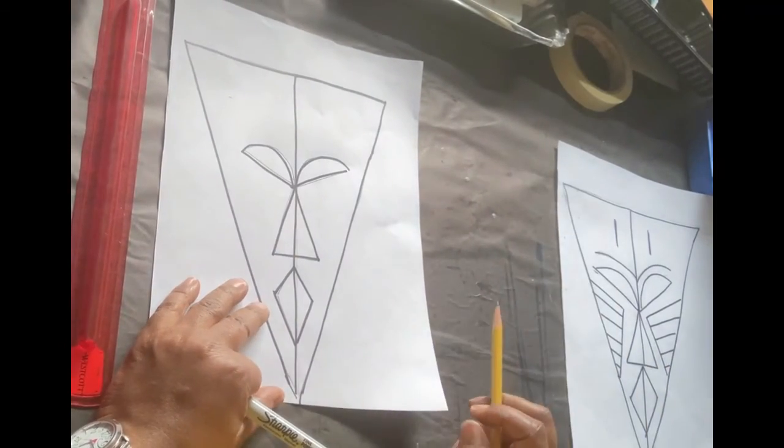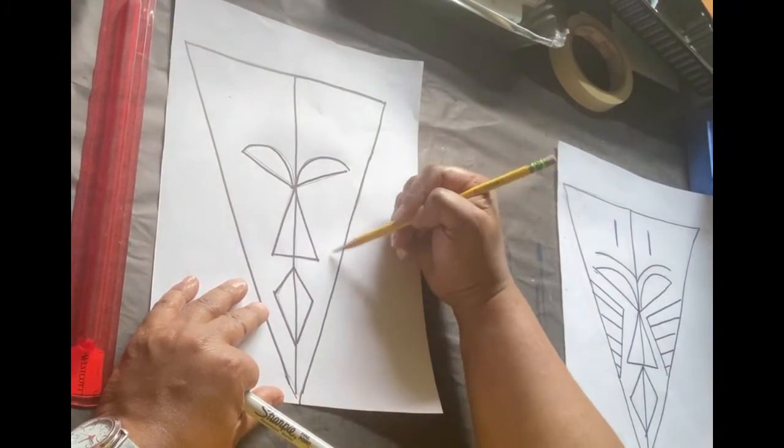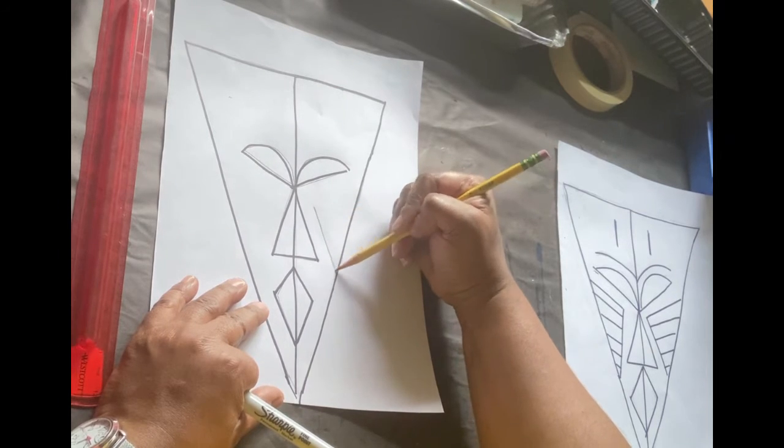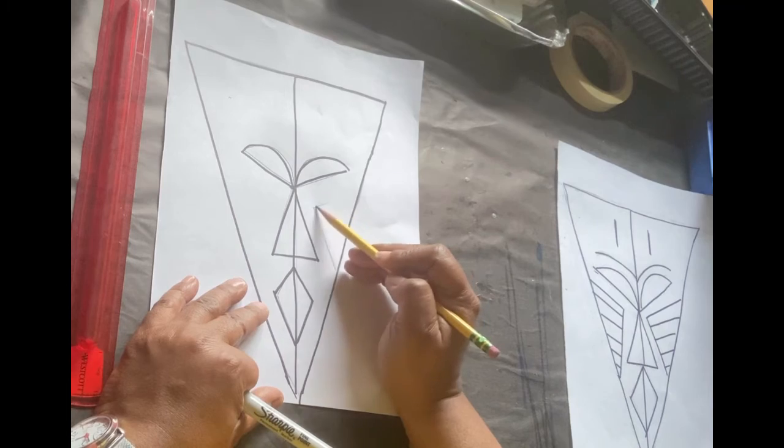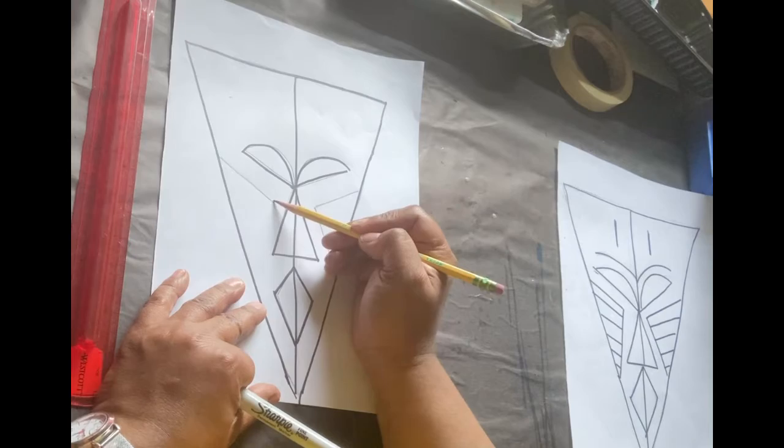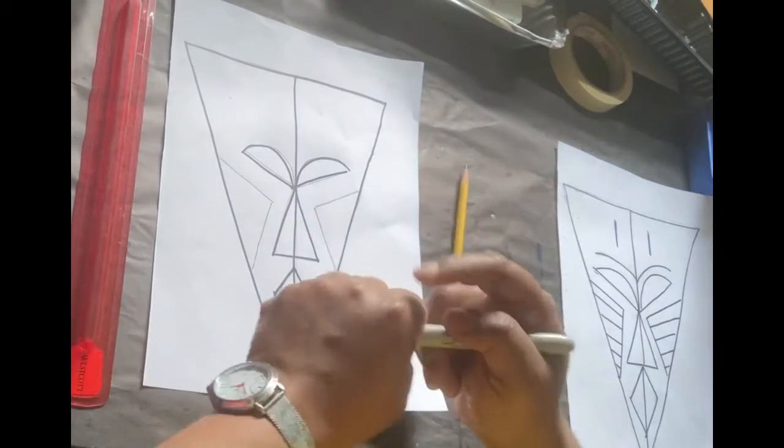We're going to use, again, more triangles to kind of accent the cheeks. Diagonal line, diagonal line. That's one cheek. Diagonal line, diagonal line. That's another cheek.